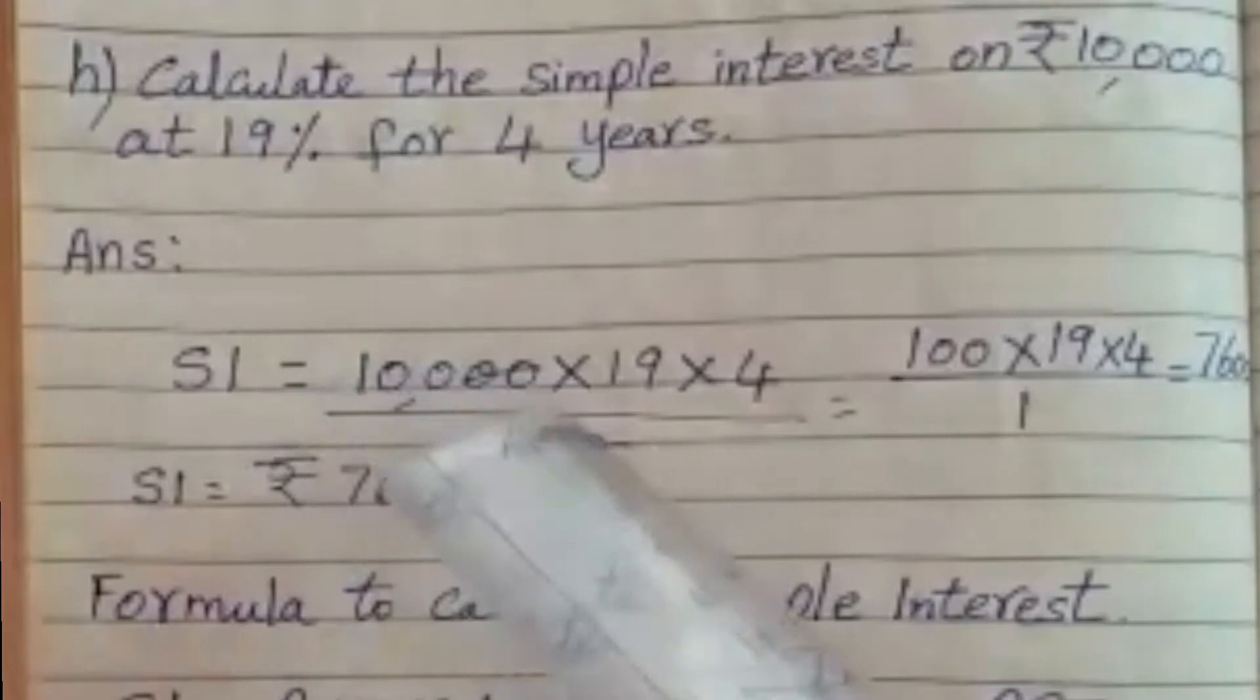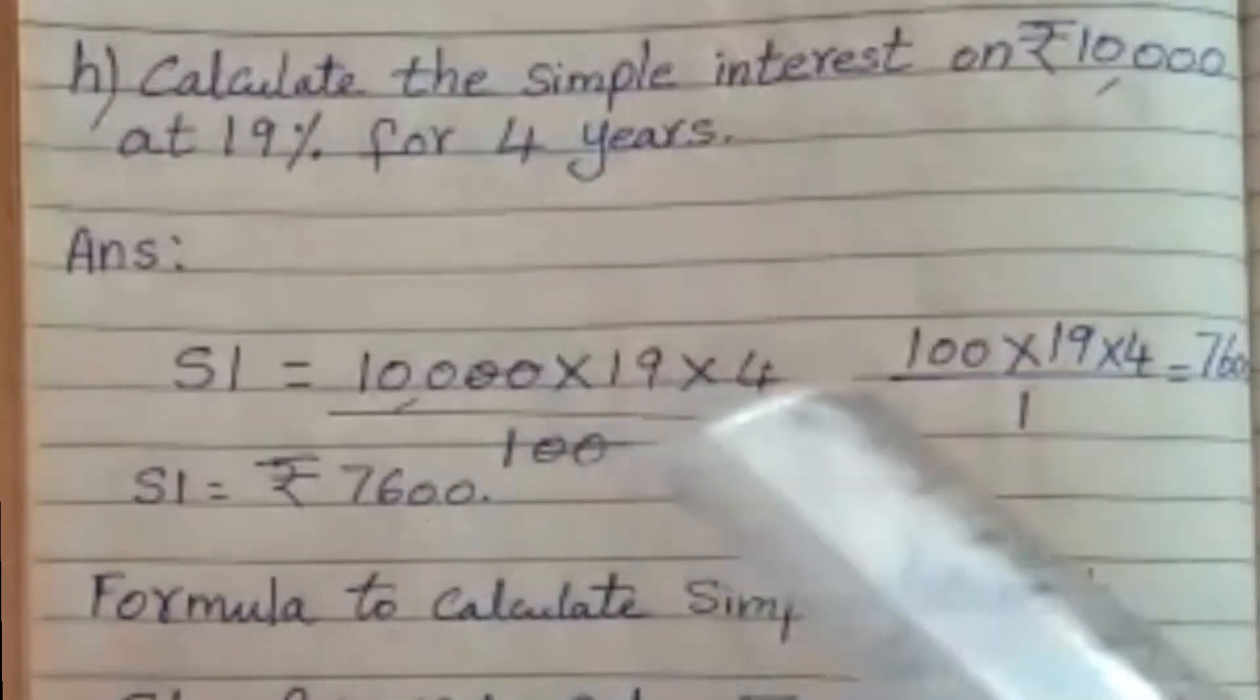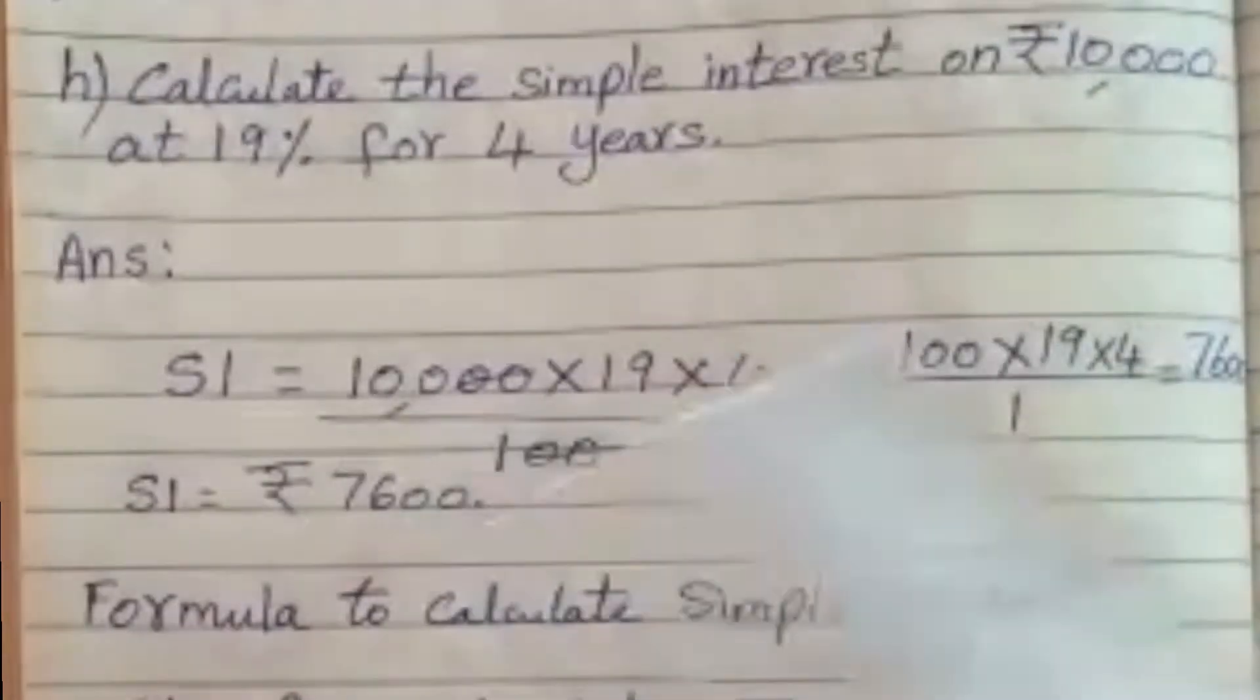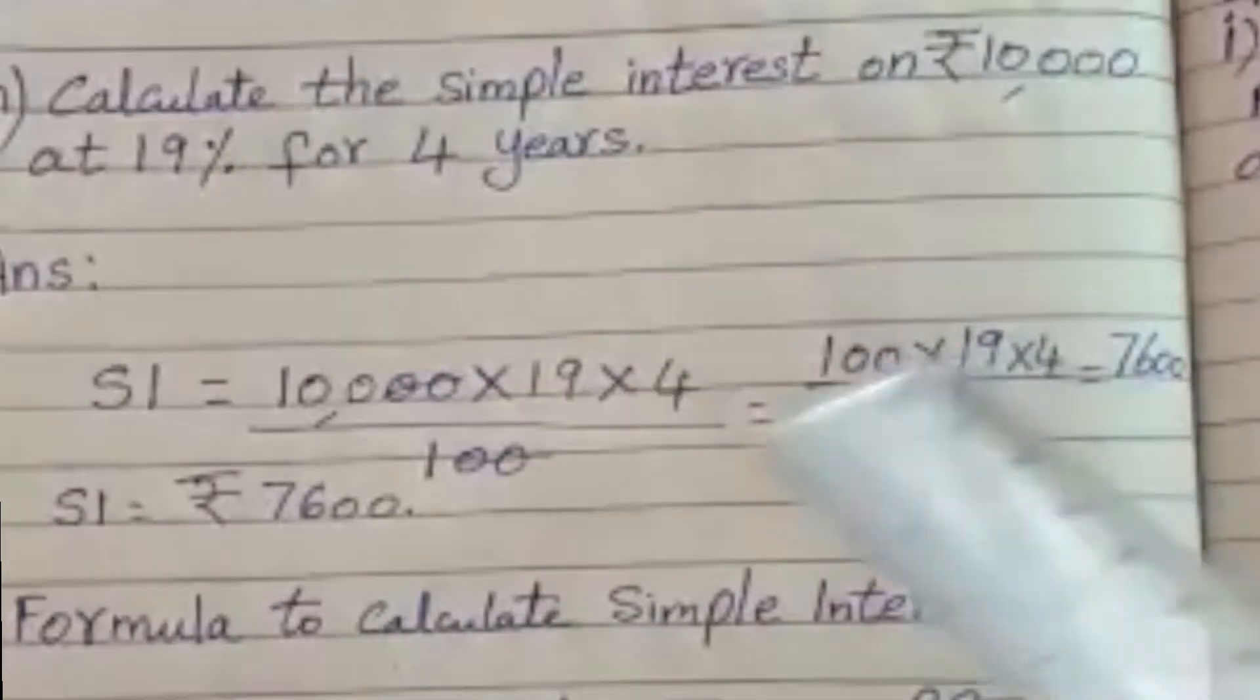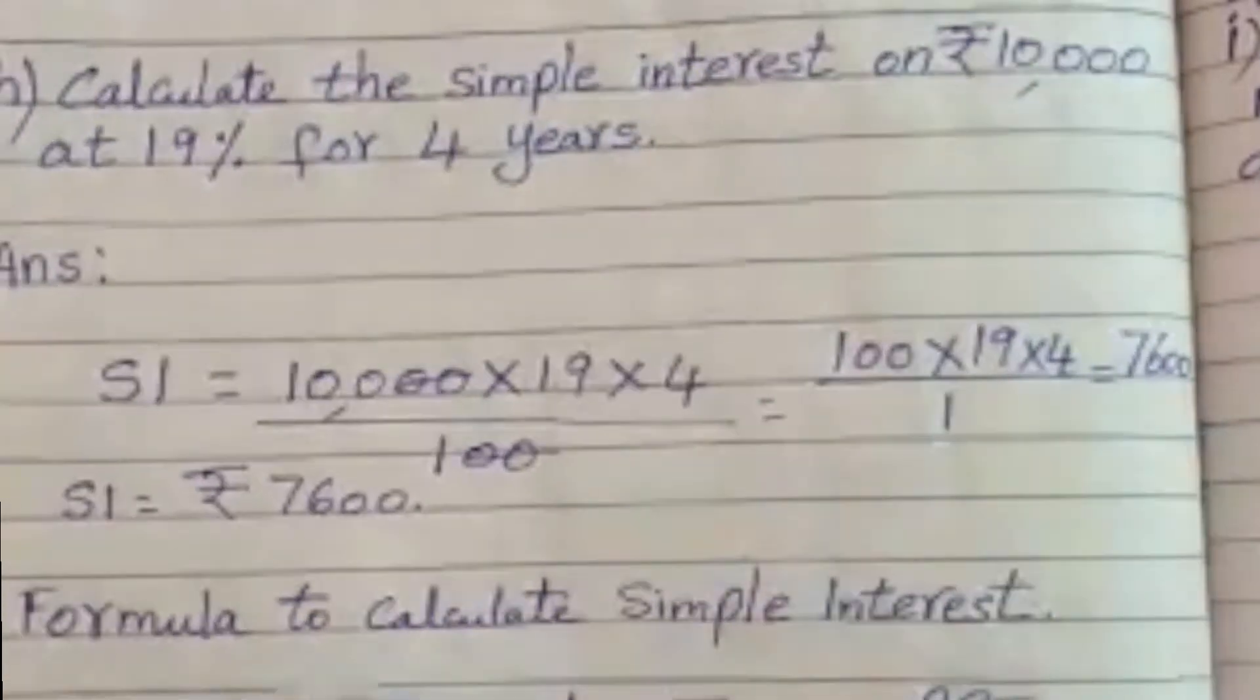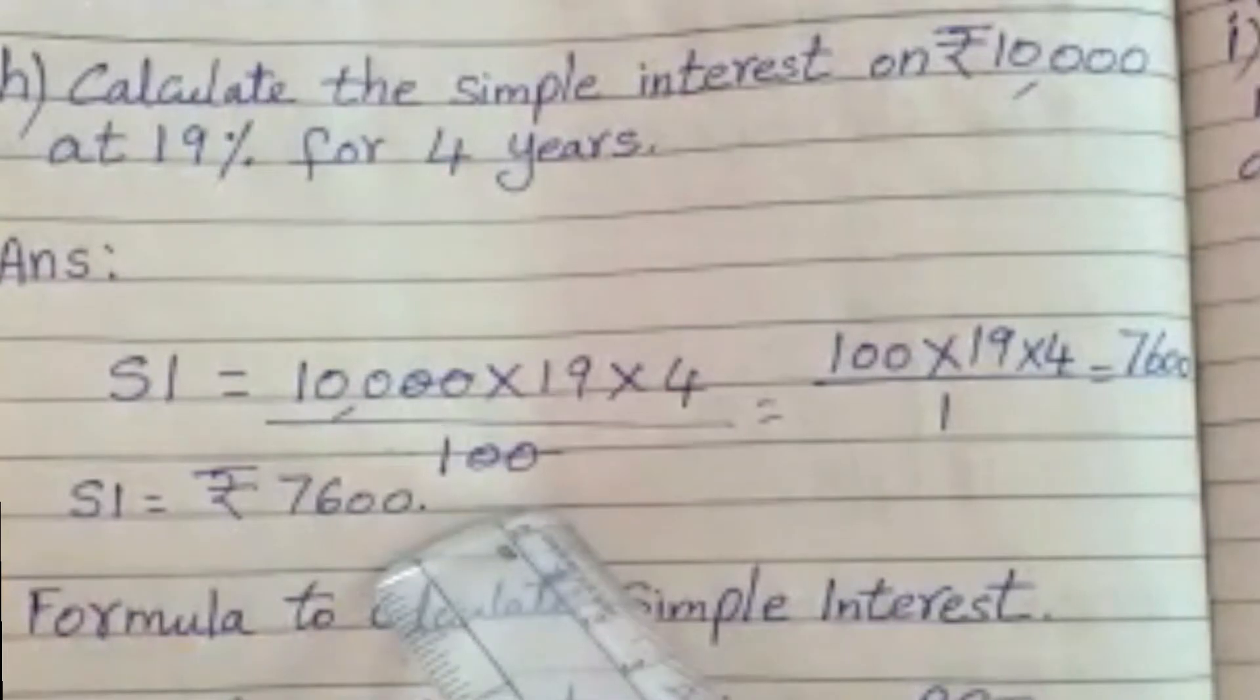See, cancel the zeros wherever possible. So we cancelled over here. So the value remained is 100 into 19 into 4 by 1. So 4 times 19 is 76. 76 into 100 is 7,600. So the simple interest is 7,600 rupees is the answer.